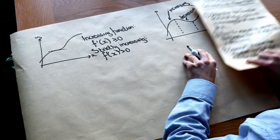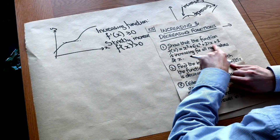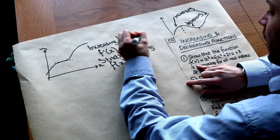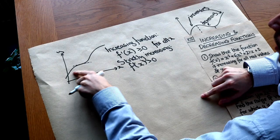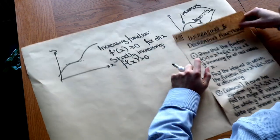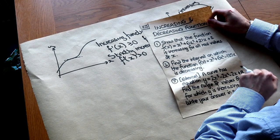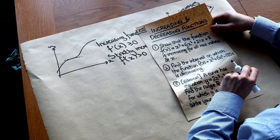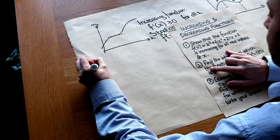There tend to be two types of questions. One is where you have to show a particular function is increasing for all x — the gradient is positive for all values of x. Or the question might ask you to identify a range of values of x for which the function is decreasing or increasing. Let's answer some exam questions of each different type.